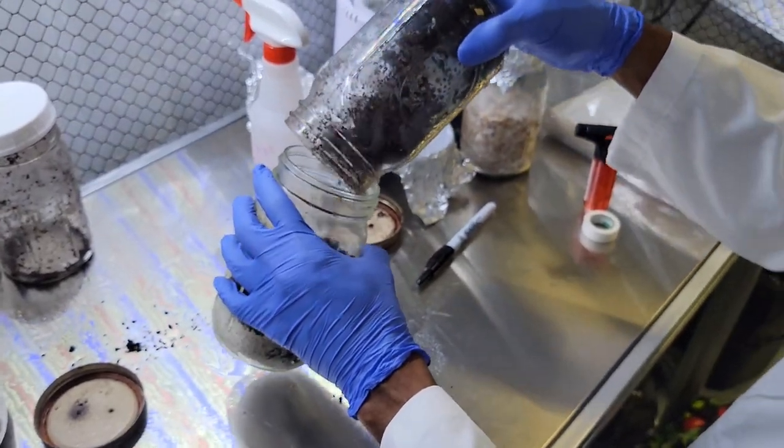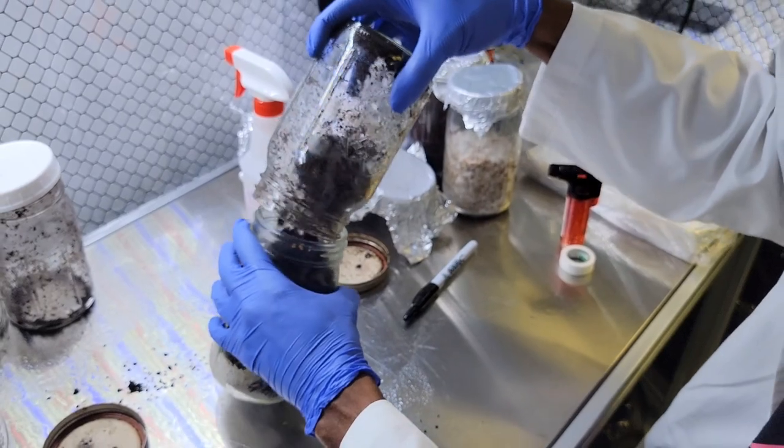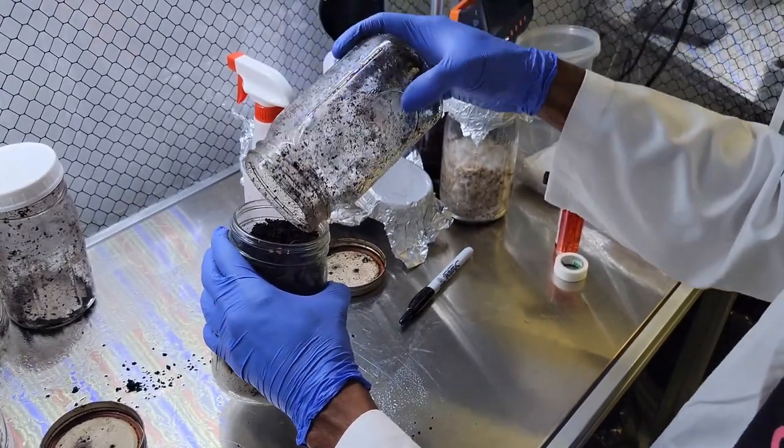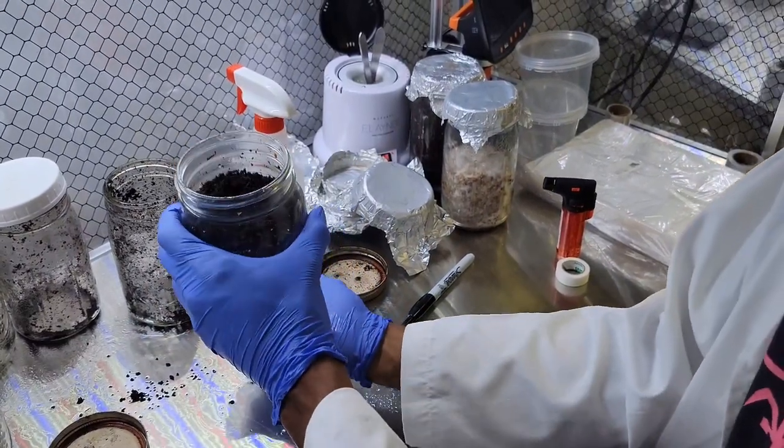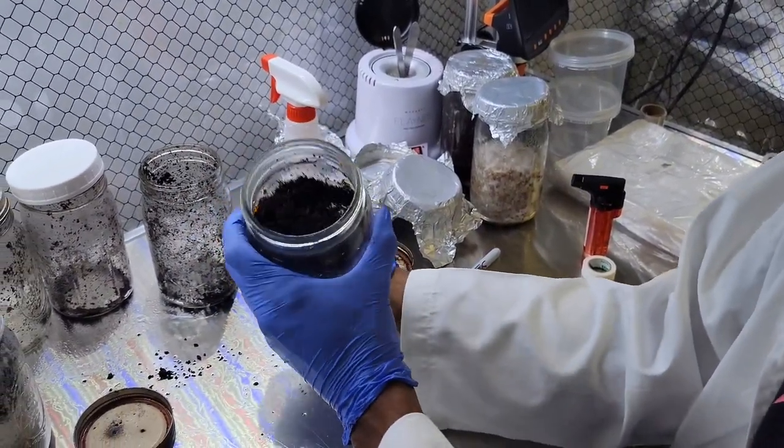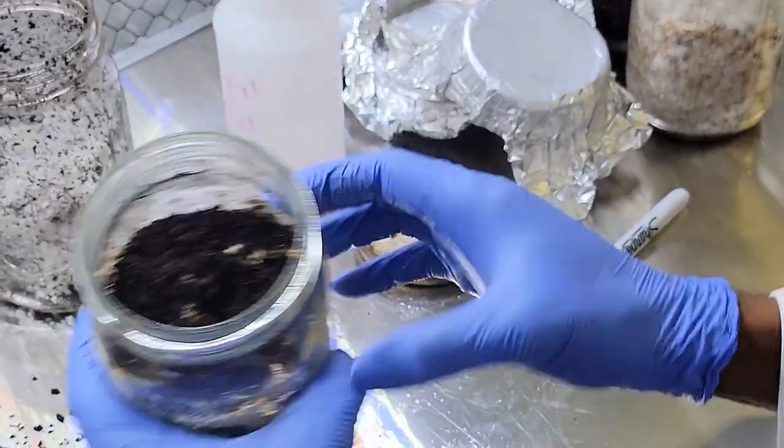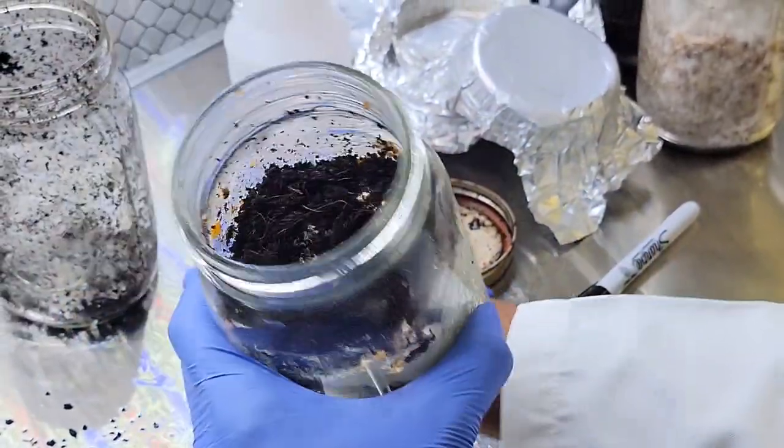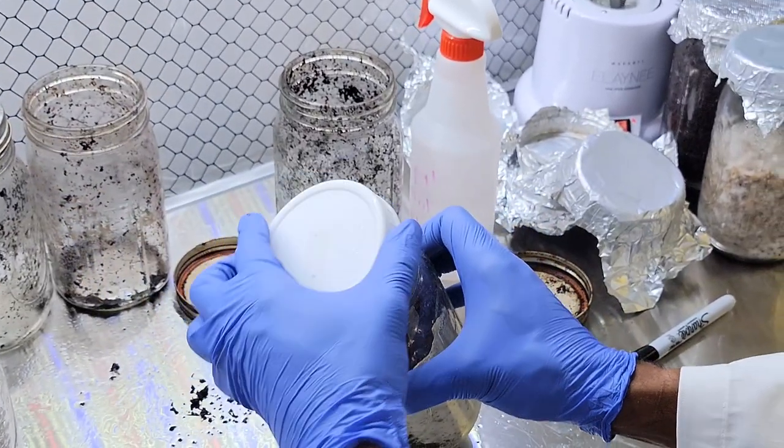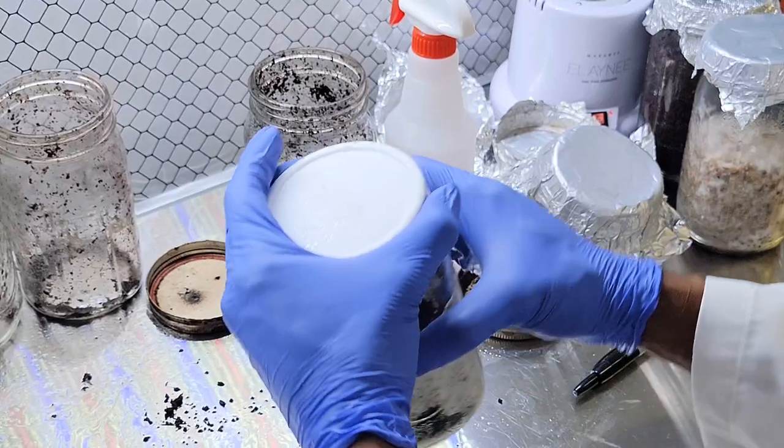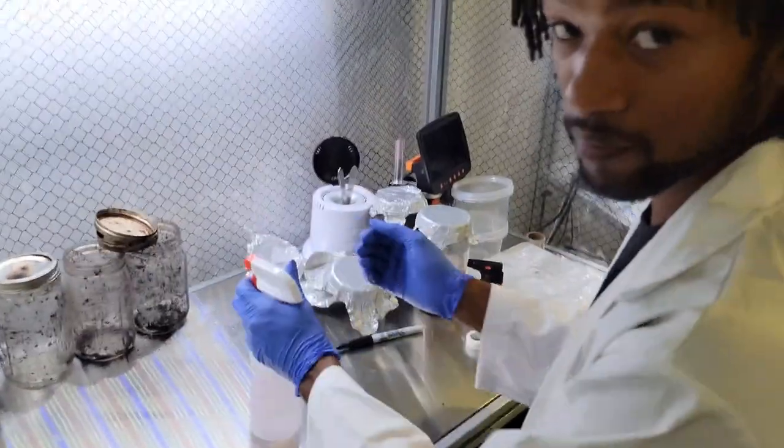There was a lot of grain spawn that was stuck to the glass that we couldn't get out, so I just decided to add the excess coco coir into that jar. I'm going to let them colonize that and then they'll fruit out. Most of the grain spawn will be covered by the coco coir and hopefully that's enough to allow them to get a nice fruiting.